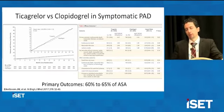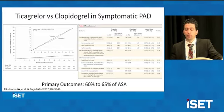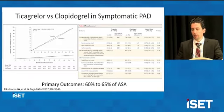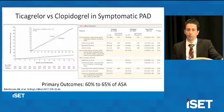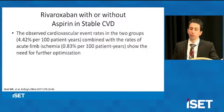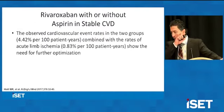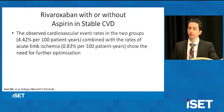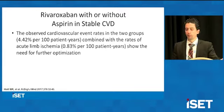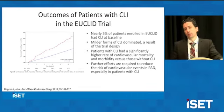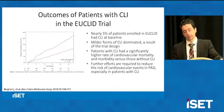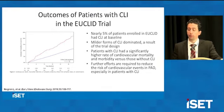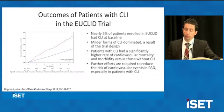It's worth mentioning the Euclid trial, which examined ticagrelor versus clopidogrel in symptomatic peripheral arterial disease patients. Only 60 to 65% of patients were on aspirin, and there was no significant advantage to ticagrelor compared to Plavix. The cardiovascular event rate of 4.42% per 100 patients per year, combined with rates of acute limb ischemia, shows there is further need for optimization. About 5% of patients in the Euclid trial had a diagnosis of critical limb ischemia, and those patients had extremely worse outcomes — a higher rate of cardiovascular mortality and morbidity versus those patients without CLI.